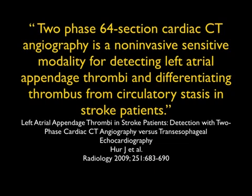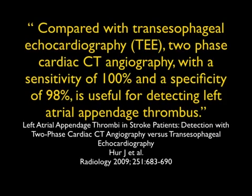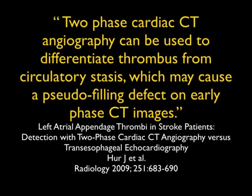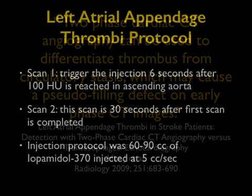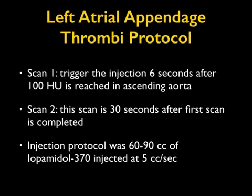One challenge is scanning too early to be certain there's no thrombus. Performing two-phase scanning allows certainty about whether something is a thrombus. If you're uncertain — whether because scans are too early, cardiac function is poor, or the appendages are too large — simply getting a delayed scan makes life very simple, and your accuracy approaches 100%. One protocol used two sets of scans about 30 seconds apart, which essentially solved the problem.